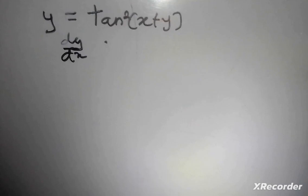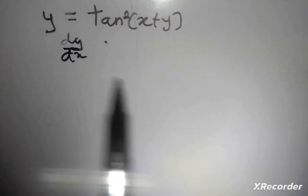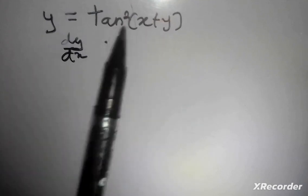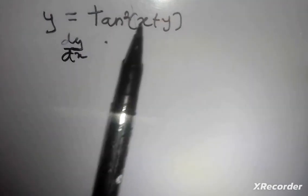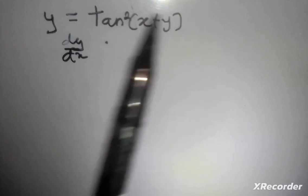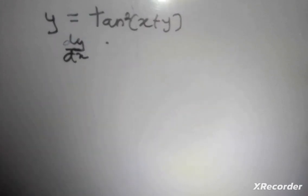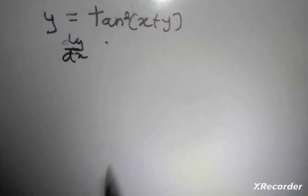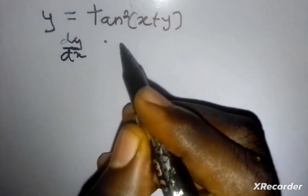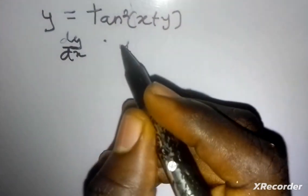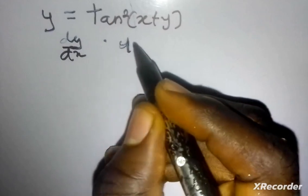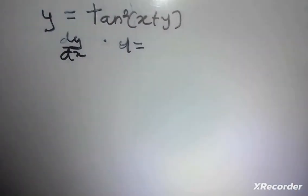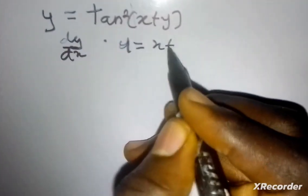First of all, I'm going to set up my substitutions and apply the chain rule method. I'll start from my inner function, x plus y. I'm going to let a variable u be equal to x plus y.